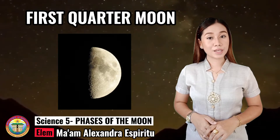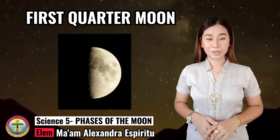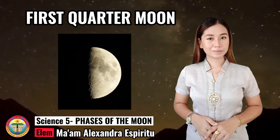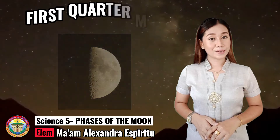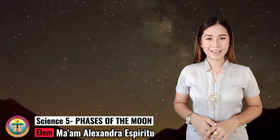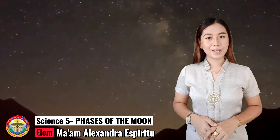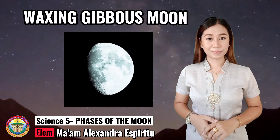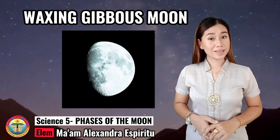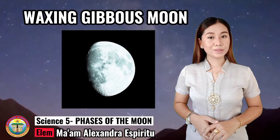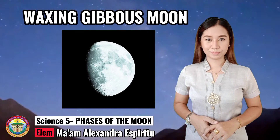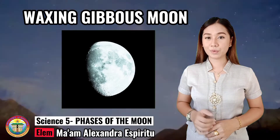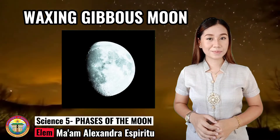The right side of the Moon appears bright and the left side appears dark. The next phase, around the tenth day, is the Waxing Gibbous Moon, where we can see three-quarters of the Moon. The Moon is more than one half illuminated by the Sun.